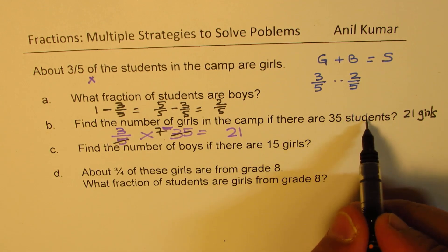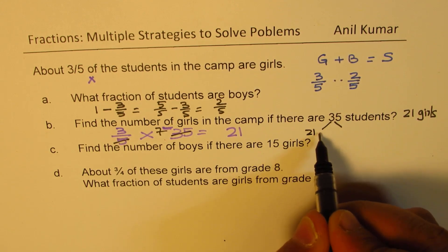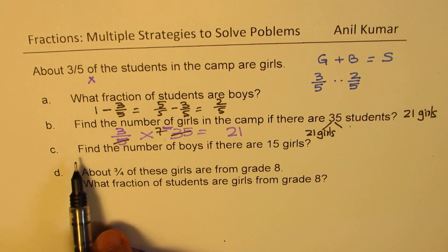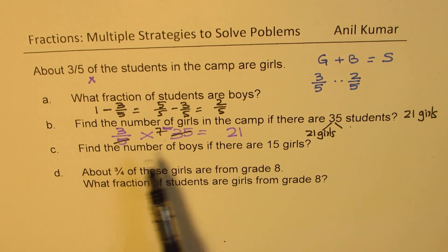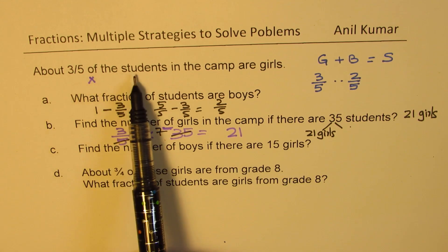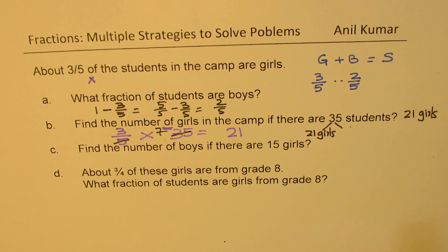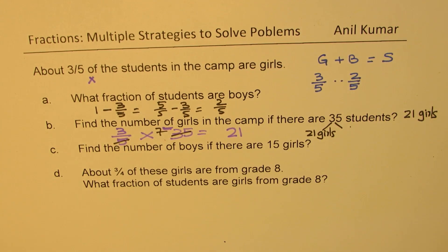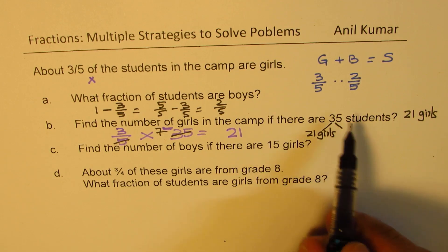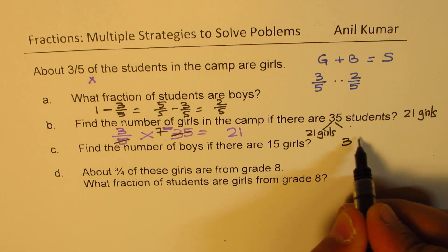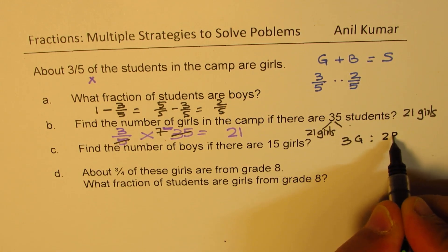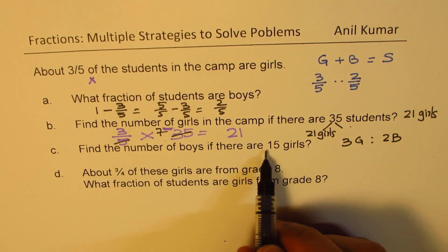So out of 35, we have 21 girls, and the rest are boys. Part C: Find the number of boys if there are 15 girls. This is a different question. We just learned that three-fifths of the students are girls, so the ratio of girls to boys is three to two. If there are three girls, then there are two boys. Here we have 15 girls — so how many boys?